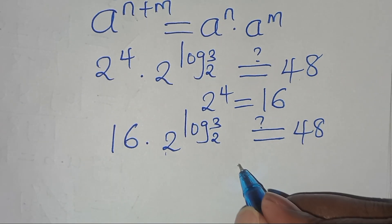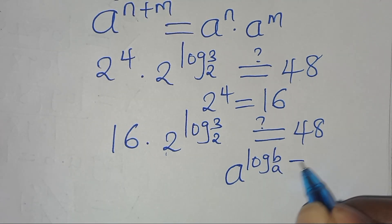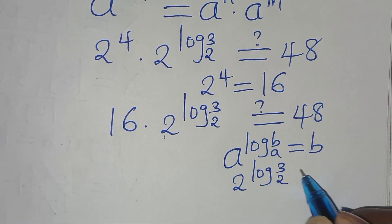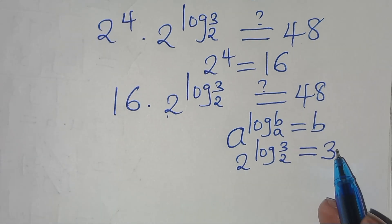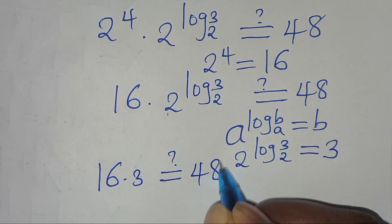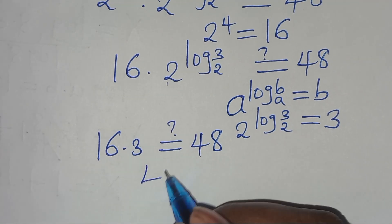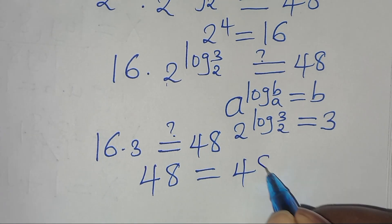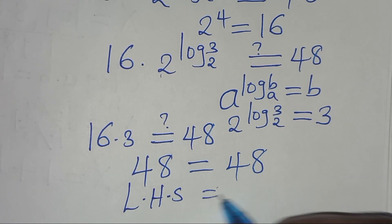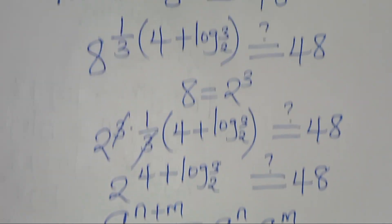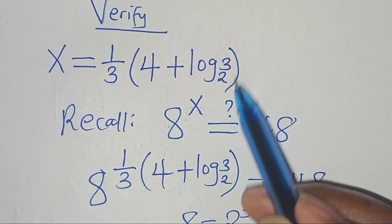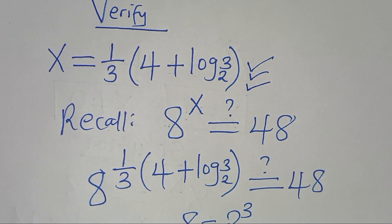Now 2^(log₂(3)) is in the form a^(log_a(b)), which equals b. Applying this property, 2^(log₂(3)) equals 3. Substituting, we get 16 × 3 = 48, which confirms that the left-hand side equals the right-hand side. Therefore, x = (1/3)·(4 + log₂(3)) satisfies the equation.